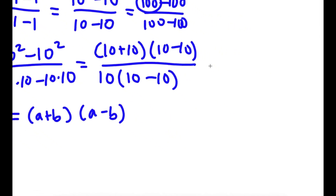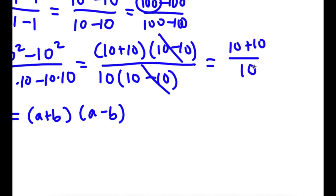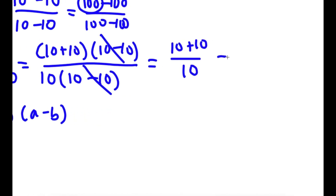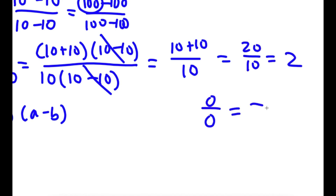Now I can go ahead and cancel these two 10 minus 10 terms. So I'm left with 10 plus 10 over 10. 10 plus 10 is 20, so I have 20 over 10, which is equal to 2. So I just proved that 0 over 0 is equal to 2.